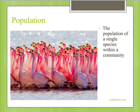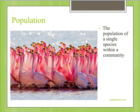Focusing still further in, we now look at a population — a single species within a community. When studying a population, scientists may not include the relationships that this particular species has with its food sources or its predators, but look more at the relationships it has with other individuals within that population. And that takes us to our next slide.